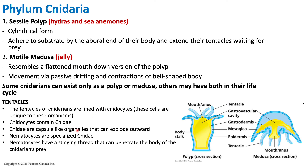Looking at the two categories of cnidarians: the sessile polyp or the motile medusa. If a cnidarian is a polyp, it would be a hydra, sea anemone, or coral. They have a cylinder-type form and adhere to substrate by the aboral end of their body, extending their tentacles waiting for prey. It's important to remember that jellies are not the only ones with tentacles — hydras and sea anemones also have tentacles. Instead of swimming to capture prey, they attach to a substrate and wait for prey to come to them.